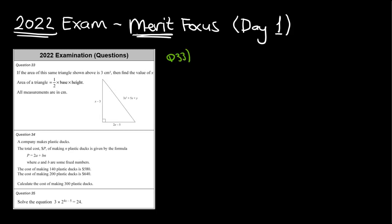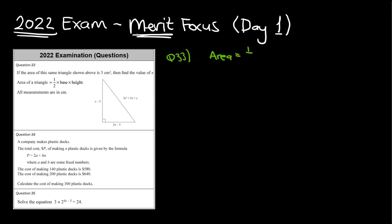This was a bit of a doozy in terms of the working. So if the area of the same triangle shown above — in this case it was actually below because I copied it for us — is 3cm squared, find the value of x. They've given us the formula to calculate the area of a triangle. So let's start off with formulas. Area is equal to one half of base times height.